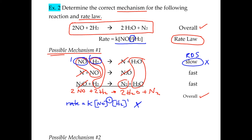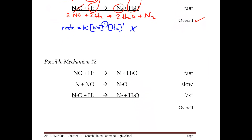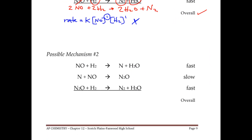Now we're going to take mechanism number 2. The only difference is that the slow step is now the second step. If you go through and cross off all the intermediates, you get the same overall equation: 2NO + 2H₂ → 2H₂O + N₂. The intermediates cancel out here and here.